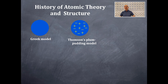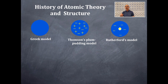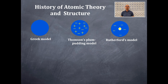Further refinement of the atom comes from Rutherford's model — that's Ernest Rutherford — where we have this central dense nuclear core, which is the nucleus, where the protons and the neutrons are. And the electrons are somewhere outside of that.